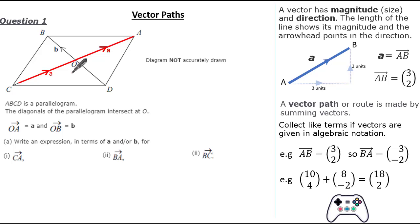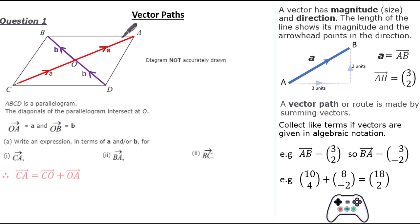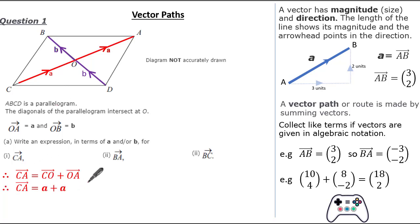Looking at the vector O to B, you might be able to spot it's exactly the same vector as D to O. So now we've added a couple more vectors, let's see if we can identify our vector path to make vector CA. To get from vertex C to A, the path is simply C to O and then O to A. We know vector CO is given as a, and we know vector OA is given as a, so therefore the vector CA is simply 2a.